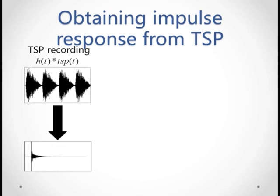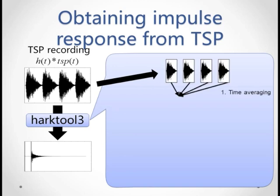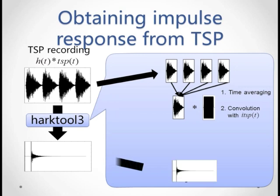The simple answer is to use the HARK software, HARK Tool 3, which does this conversion process for us. But how does it work? Well, first it takes the average of the multiple TSPs, then it convolves it with the inverse TSP. And this gives us our impulse response.